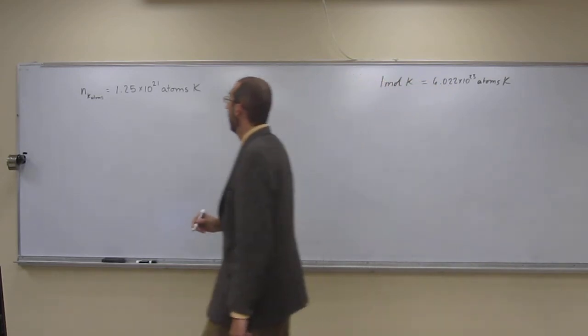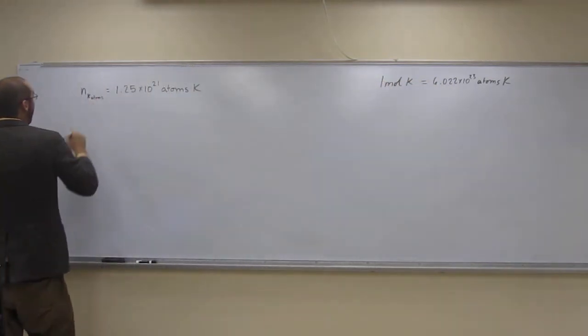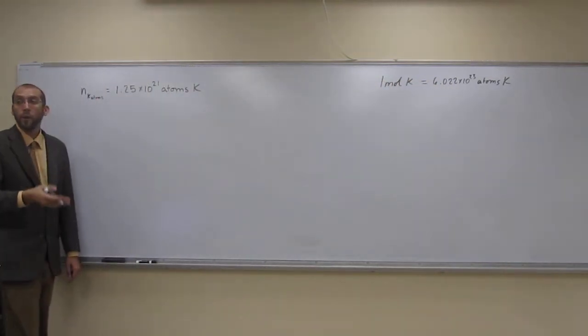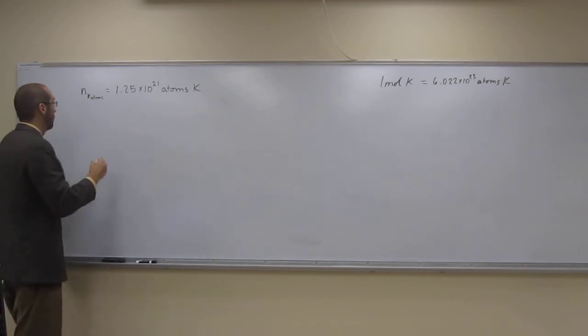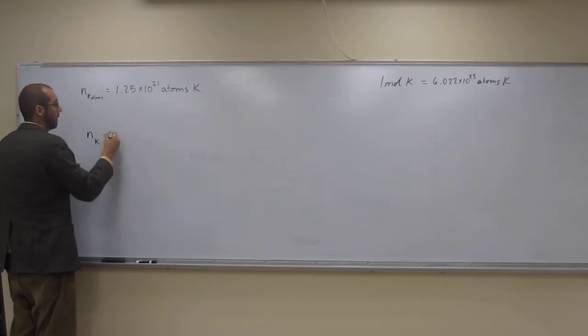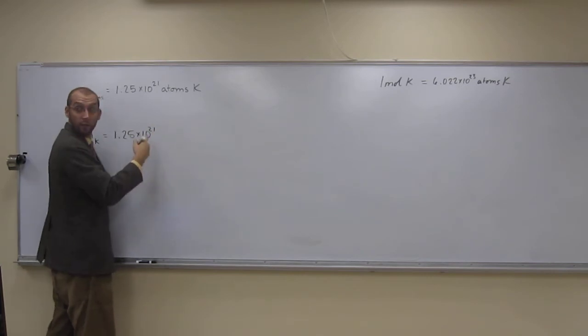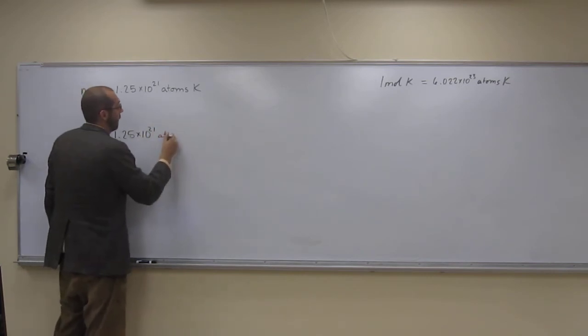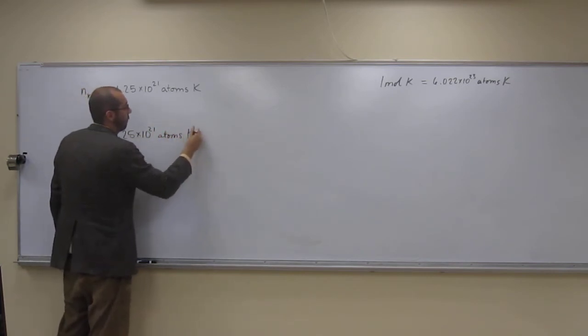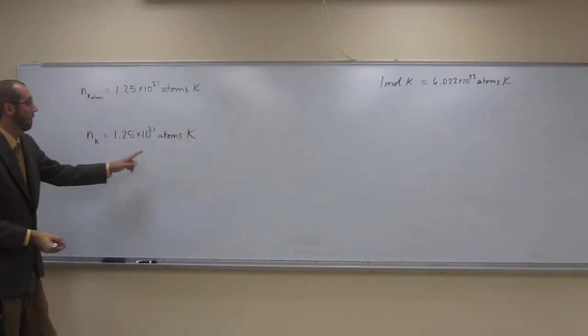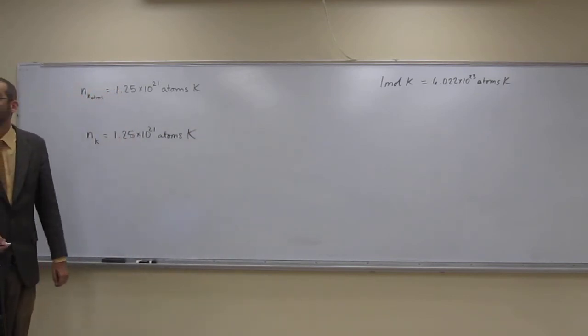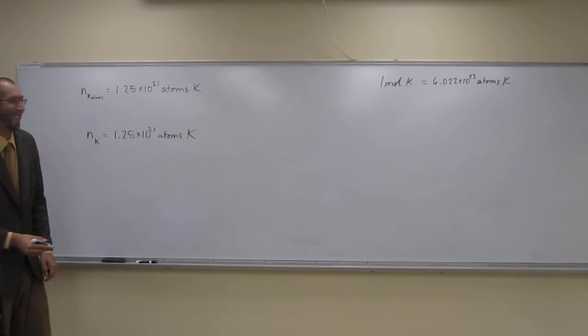Okay, so we've got the number of atoms of potassium, and we want the number of moles of potassium. So the number of moles of potassium, we're just going to say 1.25 times 10 to the 21st atoms of potassium. And do we have a conversion factor that will convert that to moles written up there? Yes, yes we do.